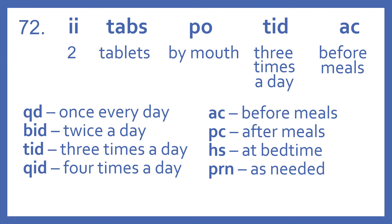So II means two, TABS is tablets, PO is by mouth, TID is three times a day, and AC is before meals. So IITABS PO TID AC means two tablets by mouth three times a day before meals.